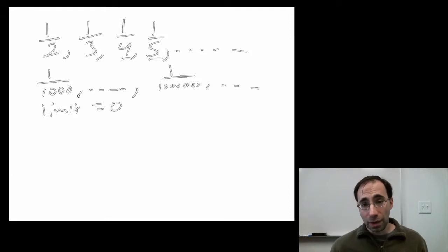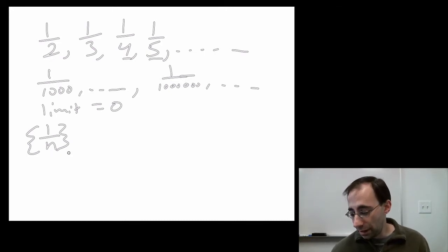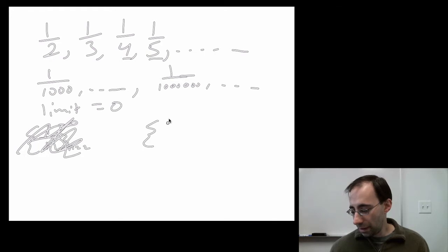A little more formal one has us write this sequence as this. Sometimes you see i, sometimes you see n. Doesn't really matter. If this is the sequence, one over n, and here n can go from two to infinity, what's the limit? Now, let's actually back up another step.